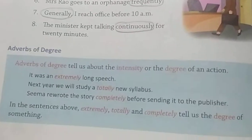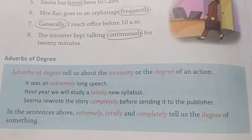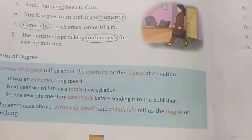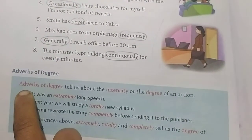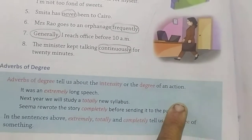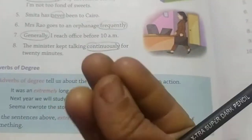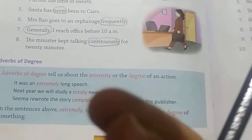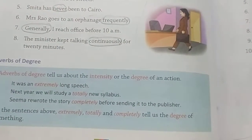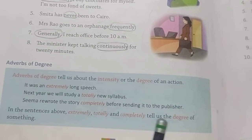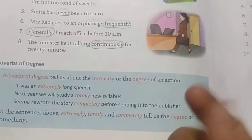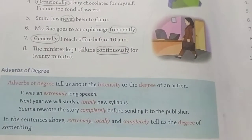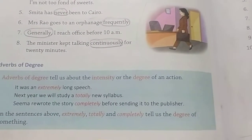Today I am starting with adverbs of degree. Adverb of degree tells us about the intensity or degree of an action — how intensely something happened. We cannot measure it in count or place or time, but we can express its intensity. For example: It was an extremely long speech — extremely long, meaning very lengthy.